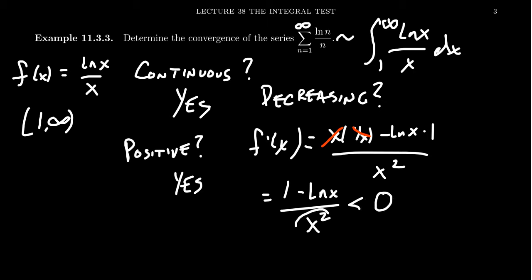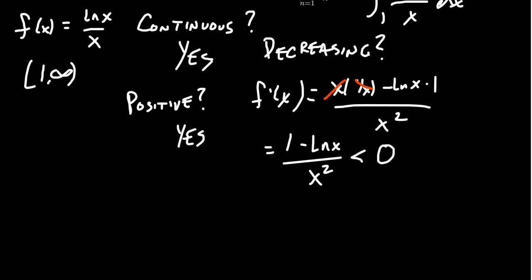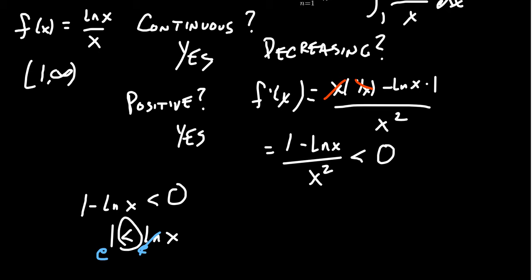Since x is greater than 1 here, x squared is always positive and can never be zero. So multiplying both sides by x squared, we just need to find when 1 minus the natural log of x is less than zero. Adding the natural log to both sides gives 1 less than ln(x). Exponentiating both sides — since the exponential is increasing, the direction is preserved — we get e is less than x, i.e., x must be greater than e.